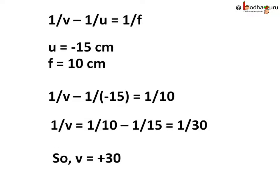So, 1 by V minus 1 by U is equal to 1 by F. Replacing the values of U and F, we get 1 by V minus 1 by minus 15 is equal to 1 by 10. For the second term on the left hand side, minus and minus would be plus. So, 1 by V plus 1 by 15 is equal to 1 by 10.